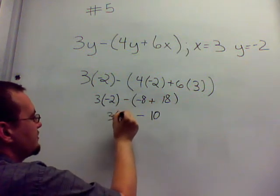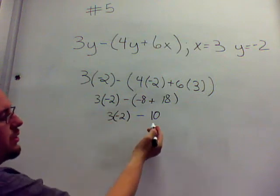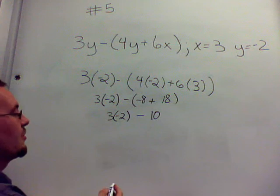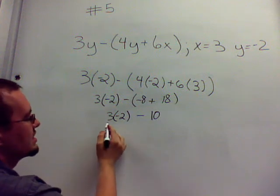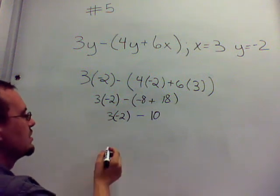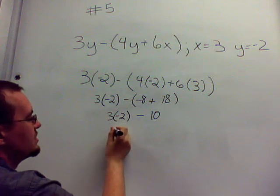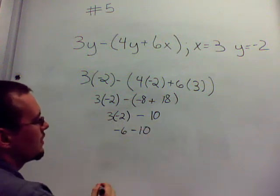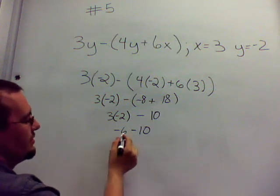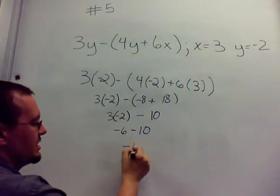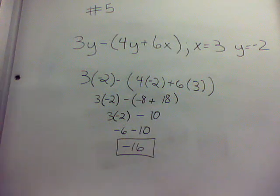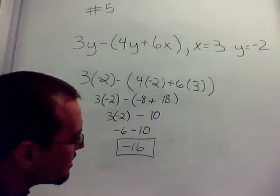I'm going to bring everything else down. There's only one term inside this parentheses now, so we don't need the parentheses anymore. Next in line is multiplication. So we have 3 times negative 2, which is negative 6, minus 10. Now we have negative 6 minus 10, which is negative 16, which is our answer. That's number 5 for you.